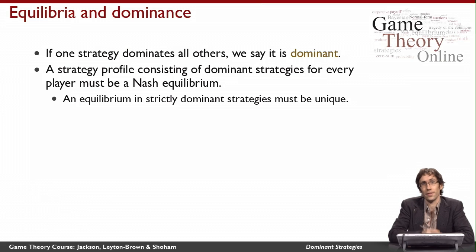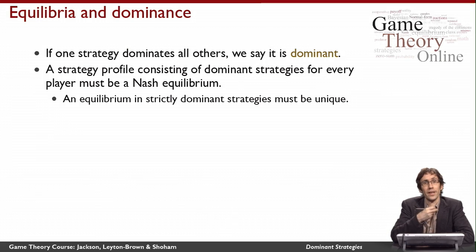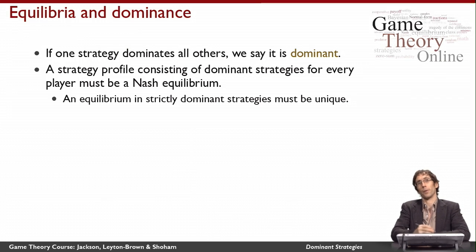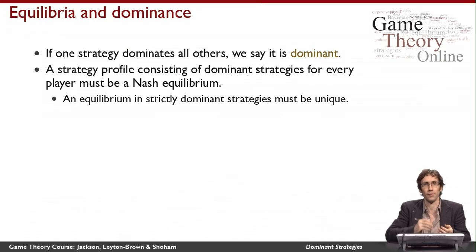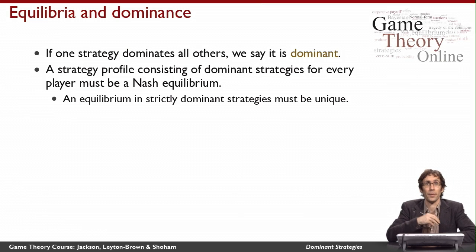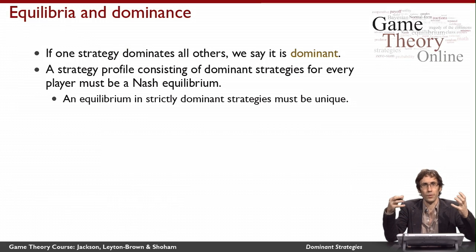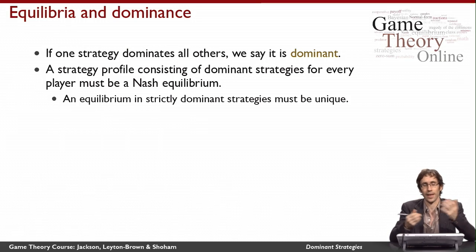Formalizing the notion that a dominant strategy is just the best thing to do: a strategy profile in which everybody is playing a dominant strategy has to be a Nash equilibrium, because none of us wants to change what we're doing — we already know there's nothing better for us to do. Furthermore, if we all have strictly dominant strategies, then this equilibrium must be unique, because there can't be two equilibria with strictly dominant strategies — that would mean we strictly prefer each to the other, which can't happen.